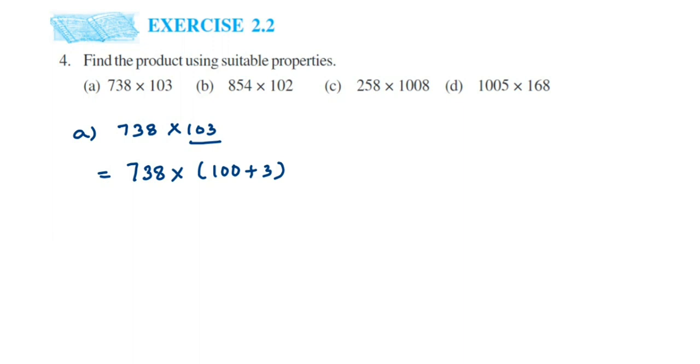Now multiply 738 by 100. Using distributive property: 738 × 100 plus 738 × 3. This equals 73,800 (738 followed by two zeros) plus 2,214. Add these two to get 76,014.